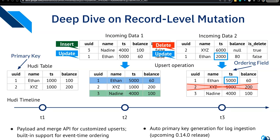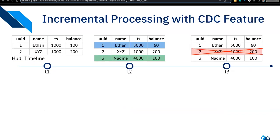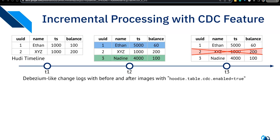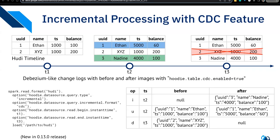For some use cases like event log ingestion which inserts data, Hudi supports automatic primary key generation — introduced in release 0.14.0 for better user experience. Hudi also provides a new CDC mode for incremental processing, giving Debezium-like change logs with before and after images. For inserts, the before image is null and the after image is the new value. For updates you have both before and after images. For deletes, the before image is the original record and the after is null.